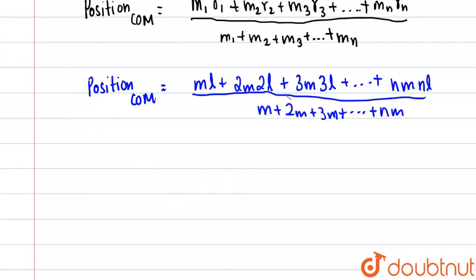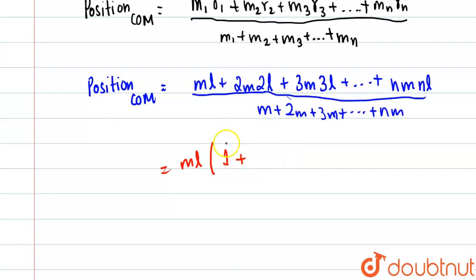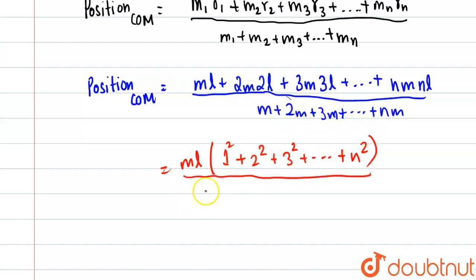In the numerator, m·l comes out as common, leaving 1·1 + 2·2 + 3·3 and so on, which can be written as 1² + 2² + 3² + ... + n². In the denominator, only m comes out as common, leaving 1 + 2 + 3 + ... + n. The m's cancel out, and we are left with l times the ratio of these two sums.